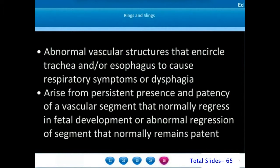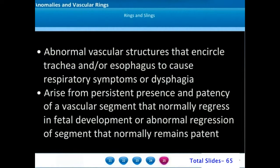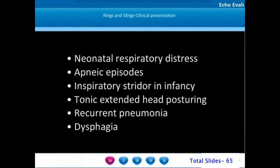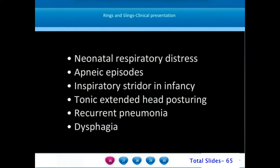The causes of vascular rings are persistence of patency of a vascular segment that normally regresses in fetal development, or abnormal regression of a segment that normally remains patent. Presentation may include neonatal respiratory distress, apneic episodes, inspiratory stridor, frequent tonic extended head posturings, recurrent pneumonias, or rarely dysphagia.